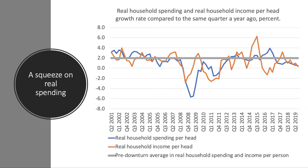This chart looks at the rate of growth of household spending per head and income per head. The thick grey line is the pre-downturn average — about 2% per year — so in real terms, spending and incomes tended to rise by about 2% per year. But over the last 10 years, the annual average growth of both income and spending per head in real terms has fallen largely below that pre-downturn growth rate, suggesting a period of pretty flat, stagnant living standards in real terms.